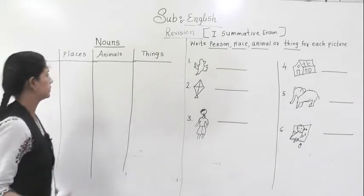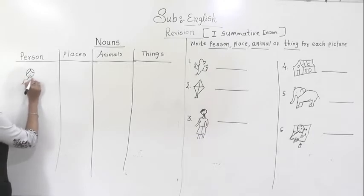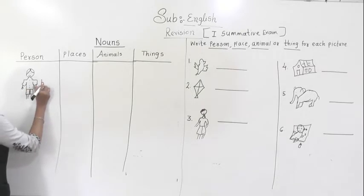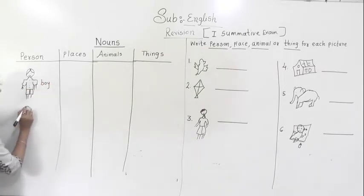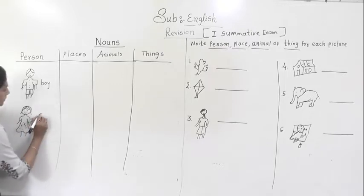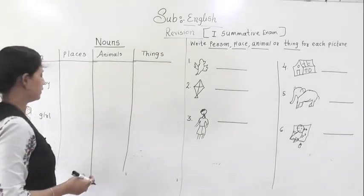But what will come in a person? So, boy. Let me draw some pictures. Boy, girl, mother, father, doctor. These all will come in a person.